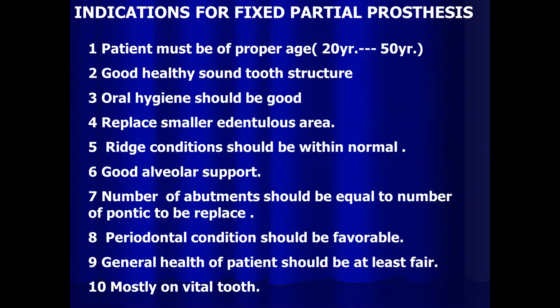The indications for fixed partial prostheses: the patient should be 20 to 50 years old with good healthy sound tooth structure and overall good hygiene. The edentulous area should be smaller, with alveolar support within normal limits. The number of abutments should equal the number of pontics to be replaced, per Ante's Law. Periodontal condition should be favorable, and general health of the patient should be at least fair.